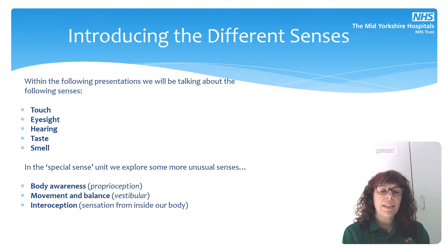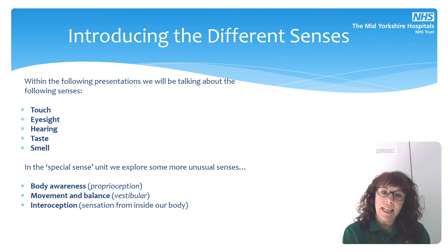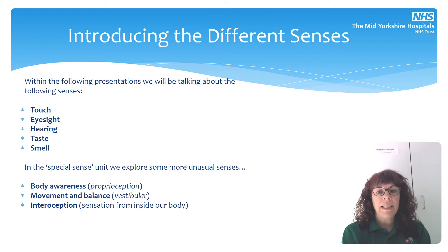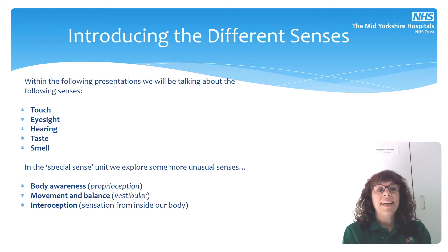In this presentation we're going to be thinking mainly about sensory processing and what that means, but in order to understand sensory processing we need to understand what we mean by the different senses. When we're thinking about sensory information, there are five main senses that most of us are aware of: touch, eyesight, hearing, taste, and smell.